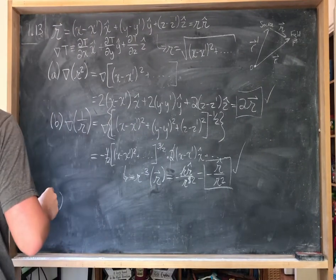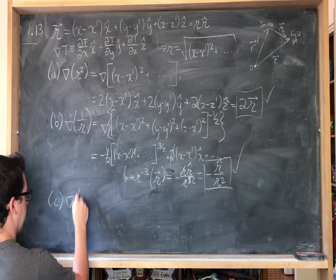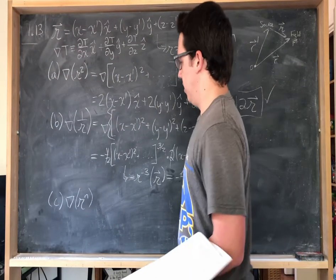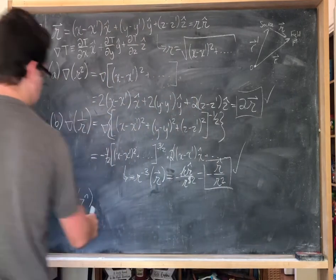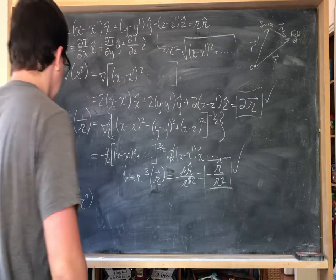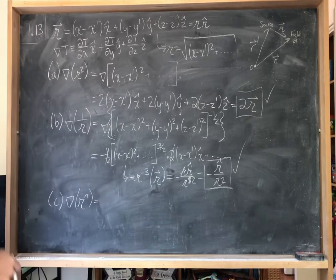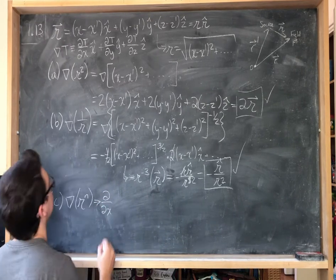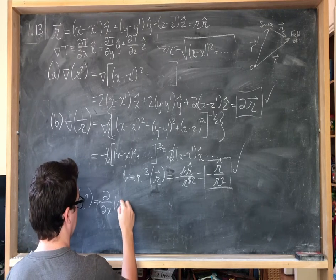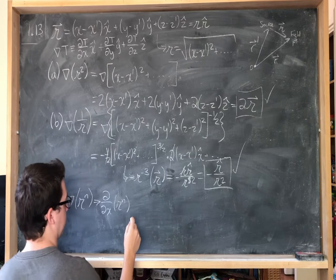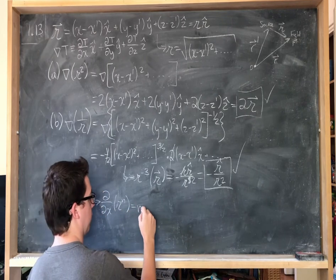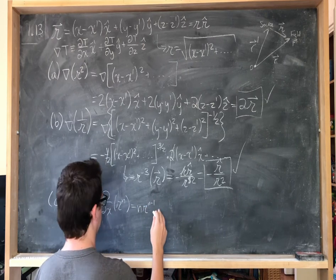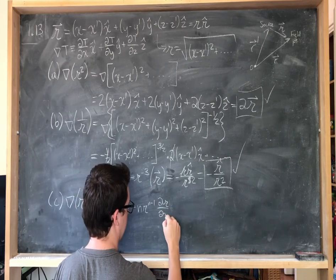Finally, we get to part c, which wants a general formula for the gradient of script r raised to the nth power. We've done it for negative one and for two; now we want to generalize. Looking at just the x-component, by the chain rule we get n times script r to the n minus one, multiplied by d(script r)/dx.